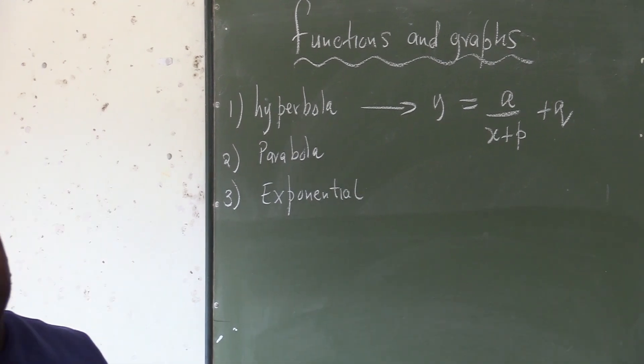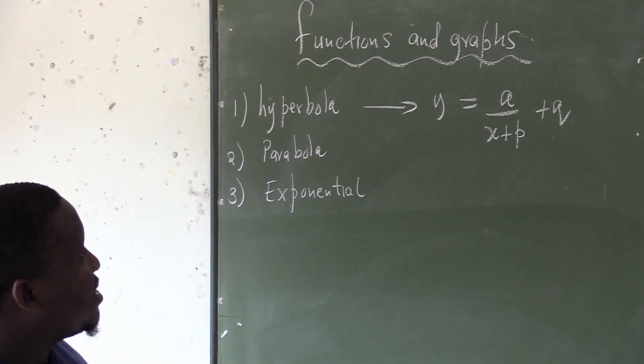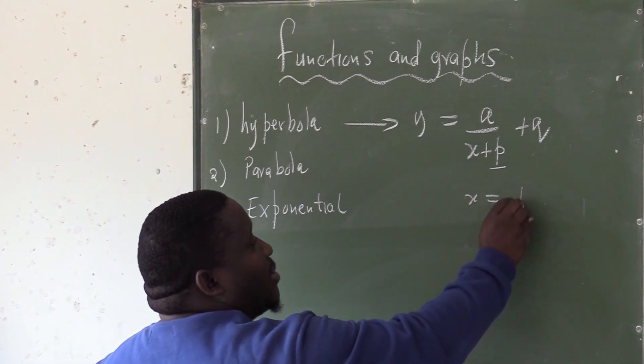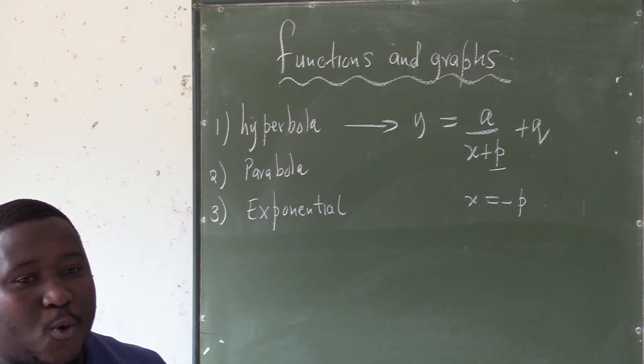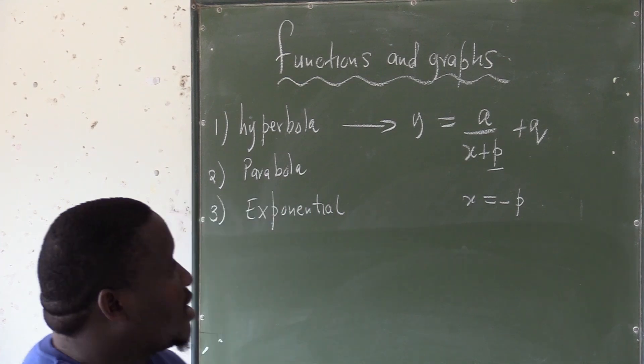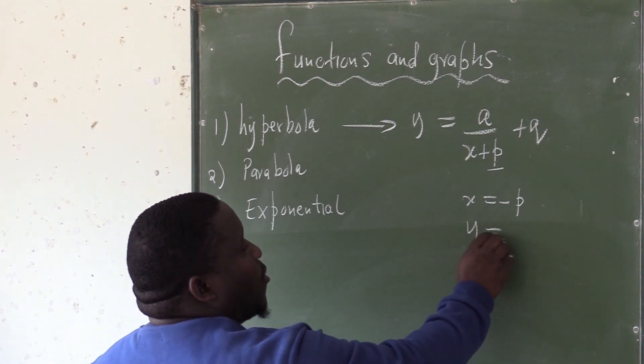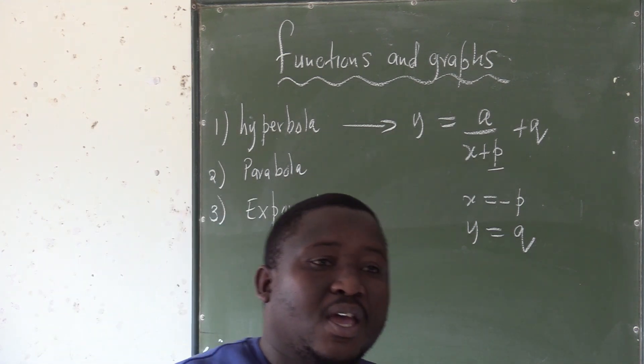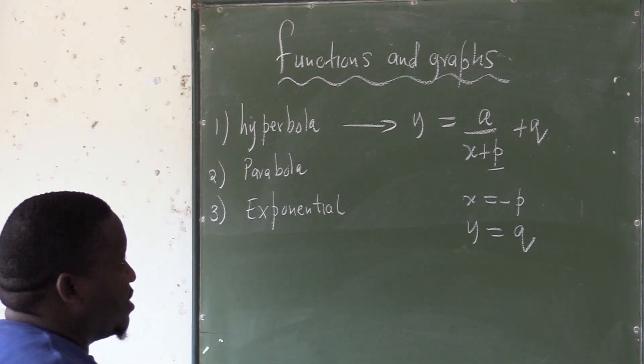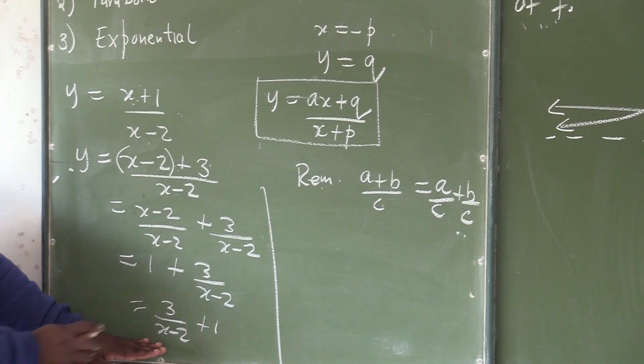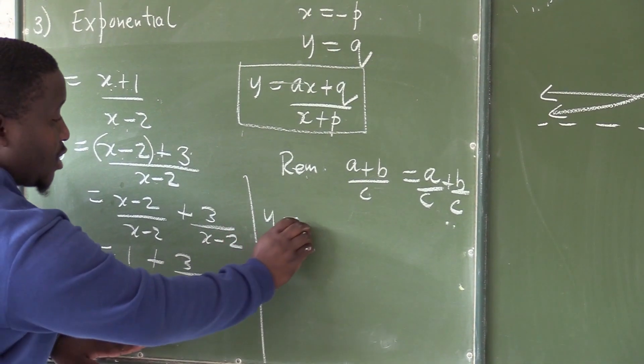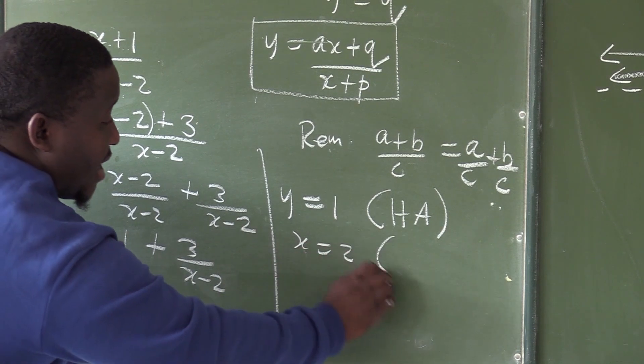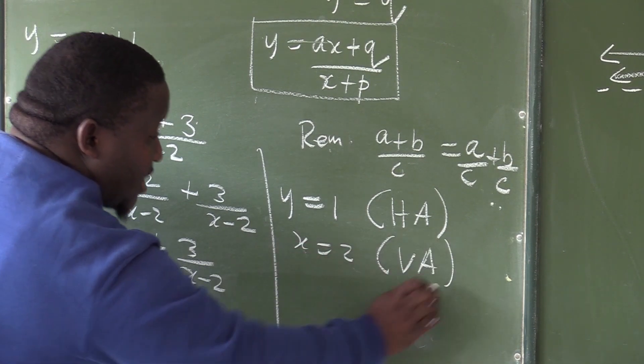This is the standard form of any hyperbola, where in this case P, X equals minus P, will give us the equation of the vertical asymptote, and where Y equals Q will give us the equation of the horizontal asymptote. Looking at this graph, I can say Y equals 1 is one of my asymptotes. X equals 2 is going to be a vertical asymptote.